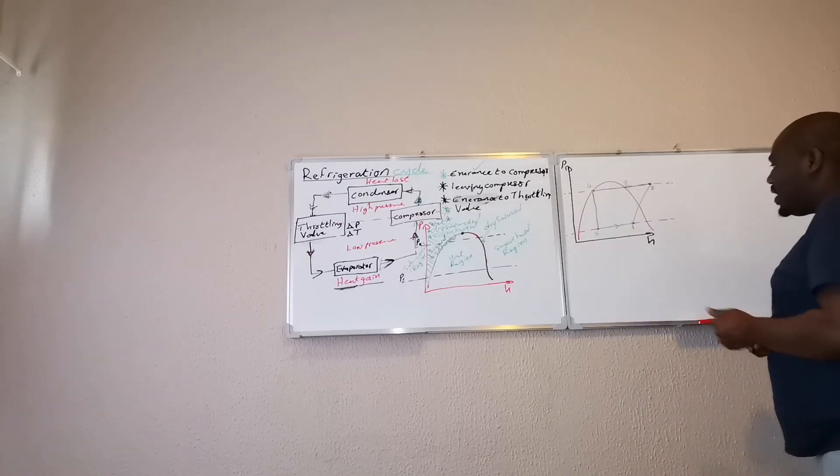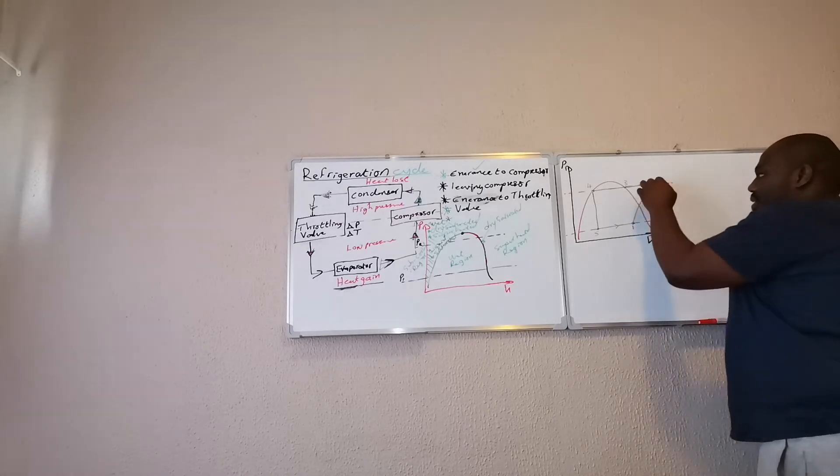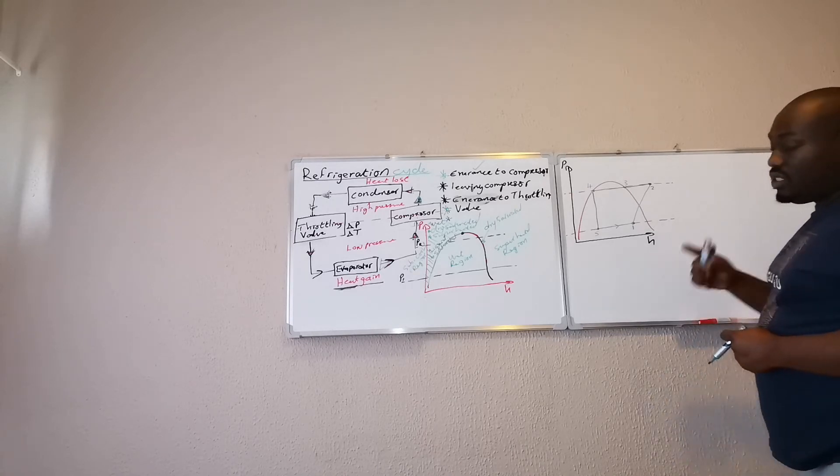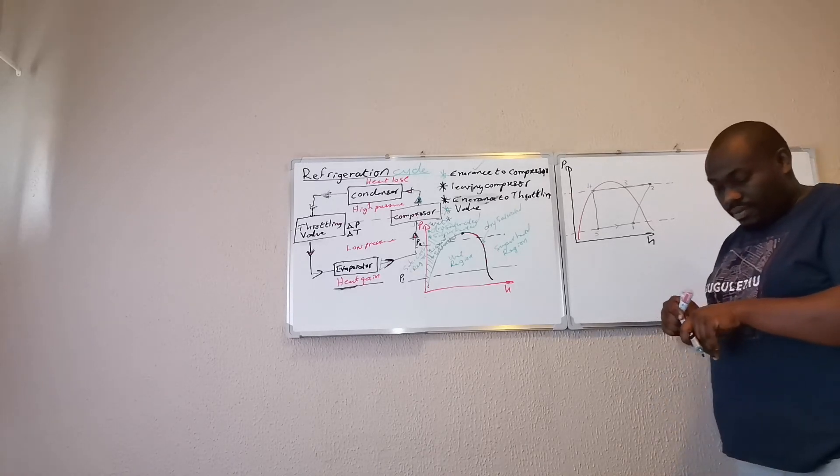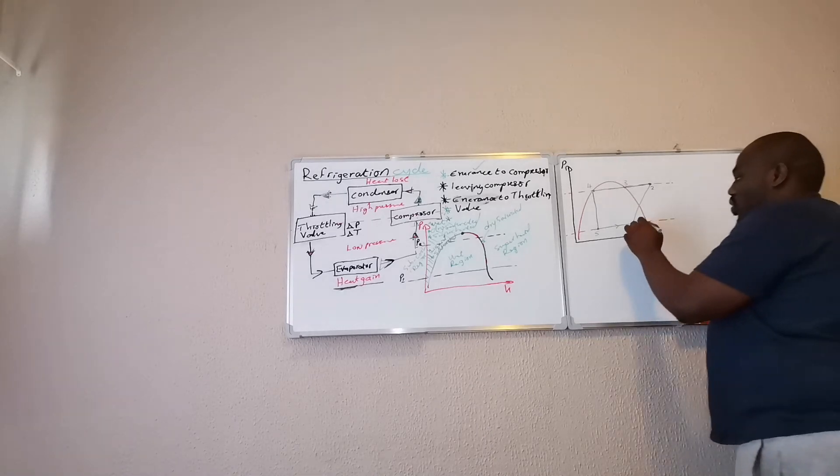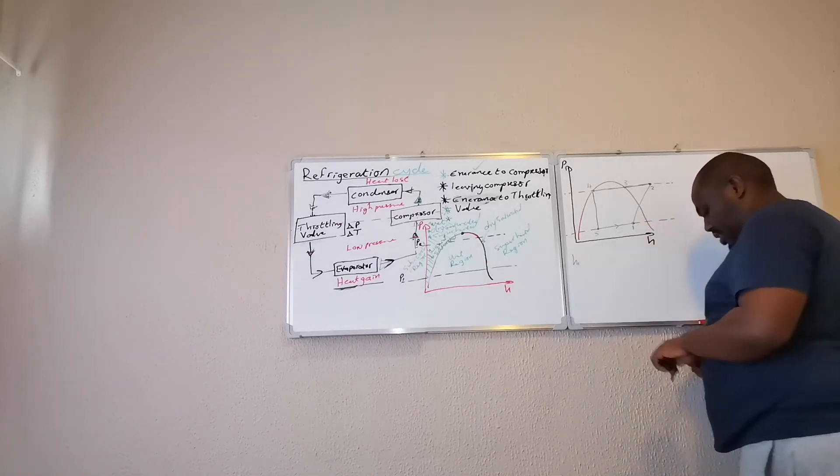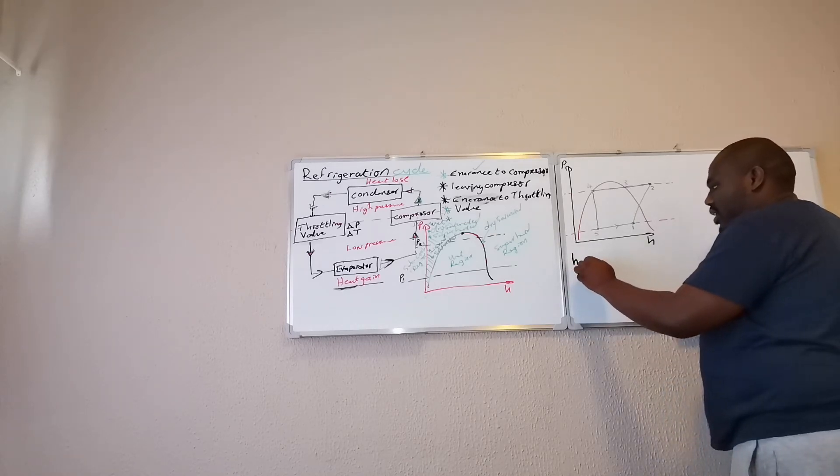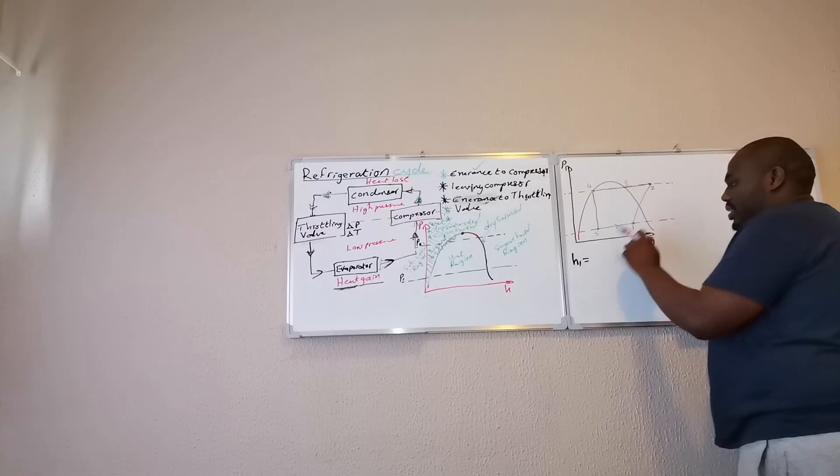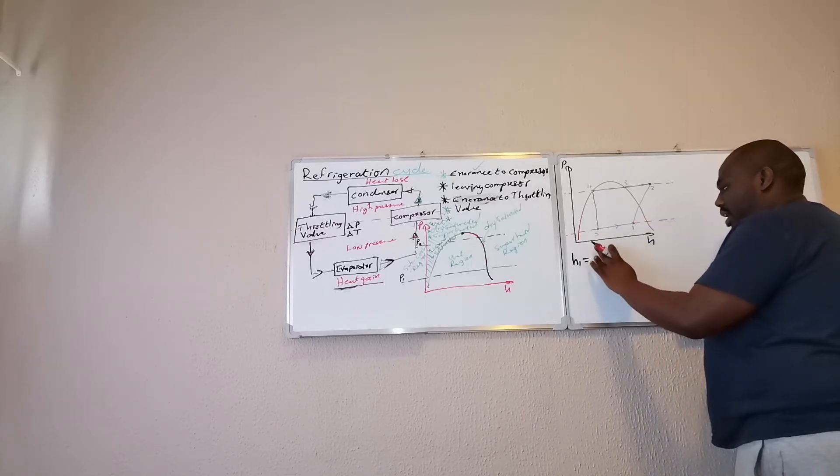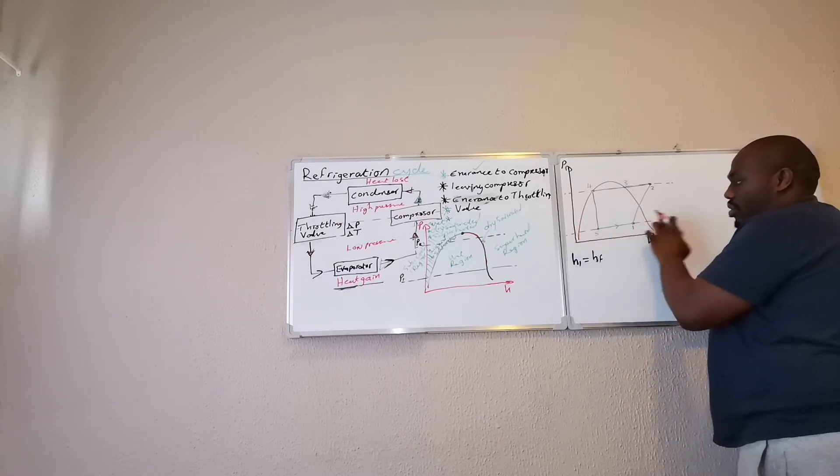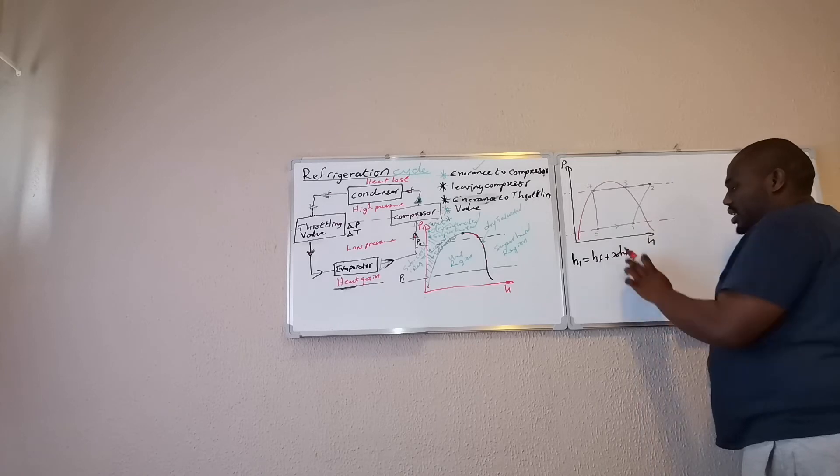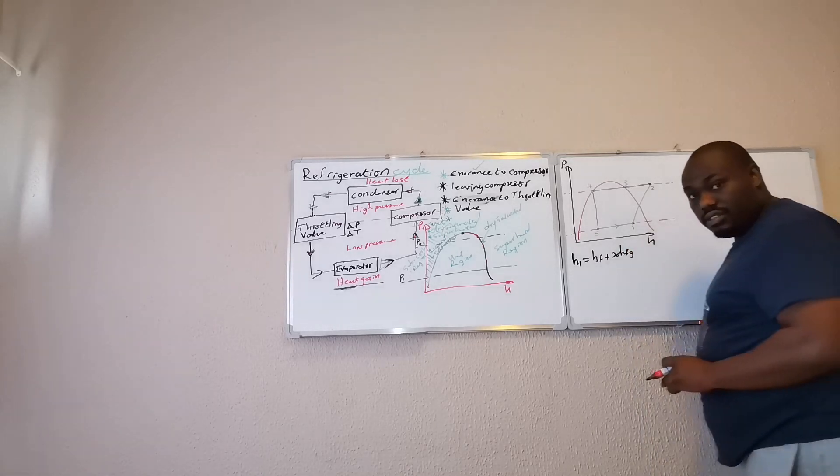So, how do I calculate the enthalpies at each of these points? Because I need the enthalpies to find out how this compressor is going to perform and so forth. So, to find H1, H1 is in the wet region. So, it would be HF at the lower pressure line plus X HfG at the lower pressure line. X would be your dryness fraction.